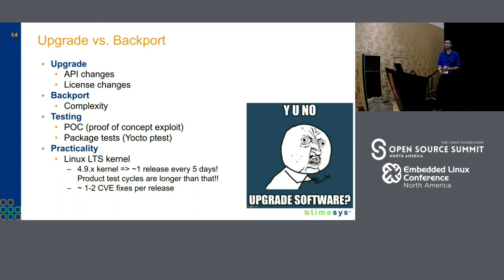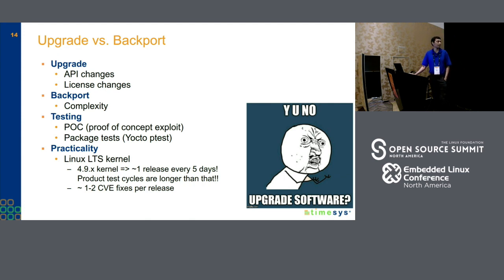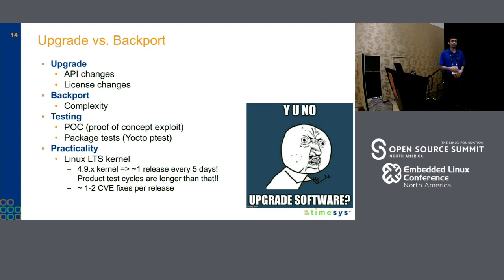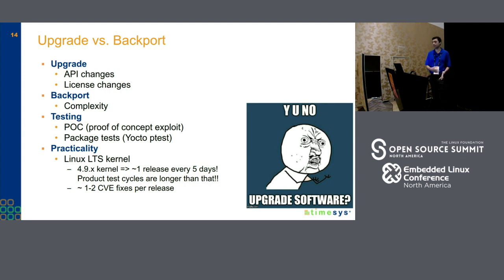The last aspect is the practicality of addressing CVEs in the Linux kernel. If you consider the Linux kernel, there is one release every five days or so for the LTS branches, which is good — it means all the bug fixes and CVE fixes are getting into the LTS branches. On average there are one to two CVEs fixed per release, but it also means you need to continuously upgrade and run tests, and many times product test cycles are greater than five days. So this is where having a monthly release cadence, or jumping to the latest minor LTS release when sufficient high or critical CVEs accumulate, might make sense. The kernel config filtering will also help because if CVEs don't affect you, you might not need to upgrade.